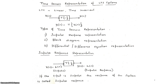In the time domain representation of an LTI system, the system is represented in terms of a block diagram. The discrete-time system is represented with input x(n) and output y(n), and the transformation operator is T, so y(n) = T{x(n)}. The types of time domain representations are: impulse response representation, ladder representation, and difference equation representation. In this syllabus we will discuss the impulse response representation.